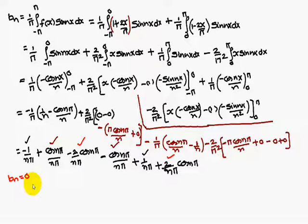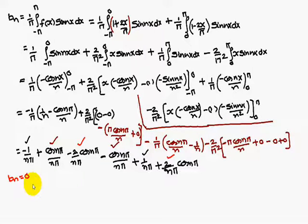Now substitute the a₀, aₙ, and bₙ values into the Fourier expansion and you will get the problem solved. Thank you.